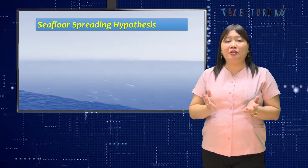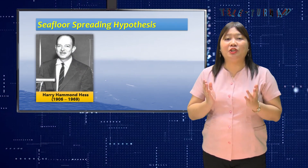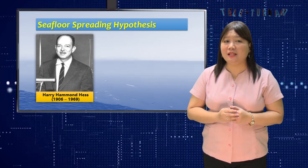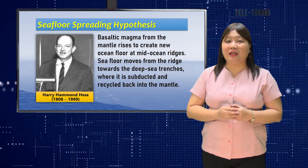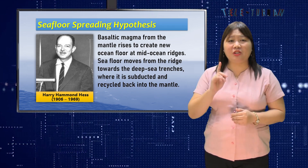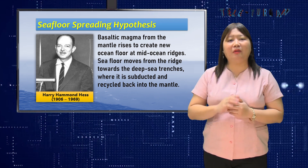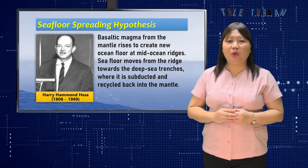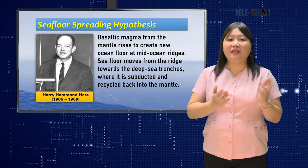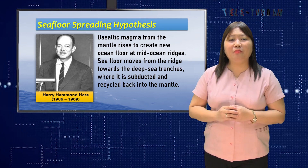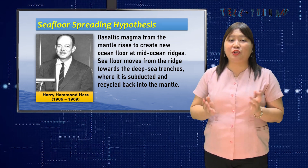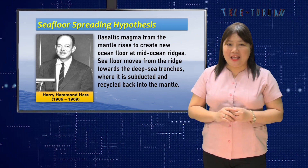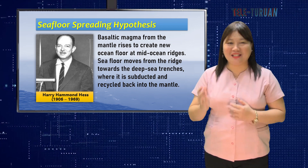First proposed by Princeton geologist Harry Hammond Hess in the early 1960s, the seafloor spreading hypothesis suggests that basaltic magma from the mantle rises to create new ocean floor at mid-ocean ridges. On each side of the ridge, seafloor moves from the ridge towards the deep sea trenches where it is subducted and recycled back into the mantle.